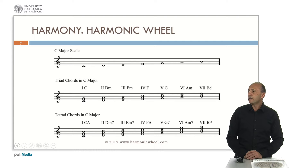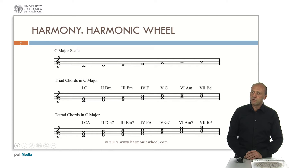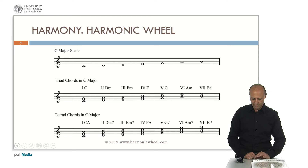First, we can review the chords associated to any key. Let's consider the C major key. Here you can see the C major scale. If we superimpose two thirds on each of those notes, we obtain the triad chords in C major. And if we superimpose three thirds on each note of the major scale, we obtain the seventh chords or tetrad chords in C major.